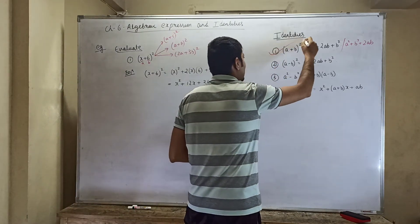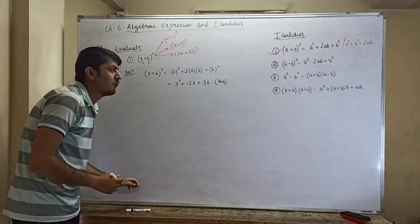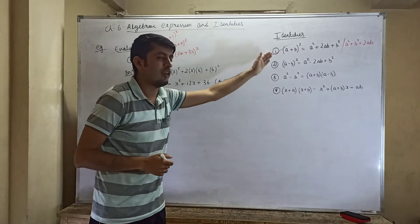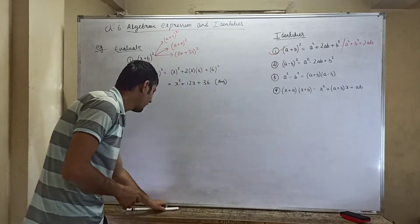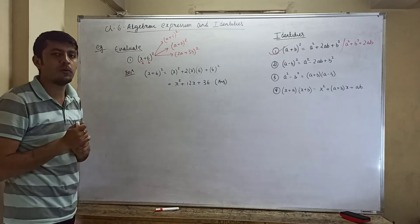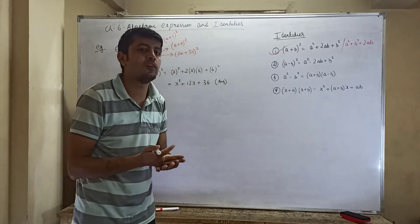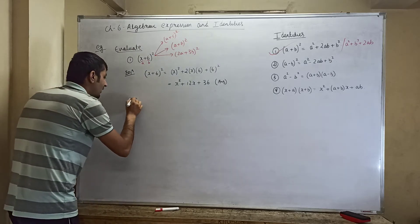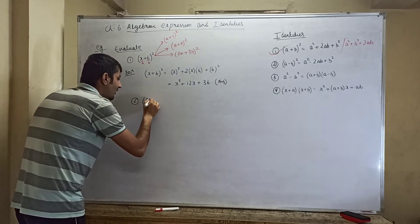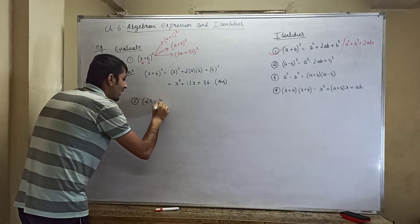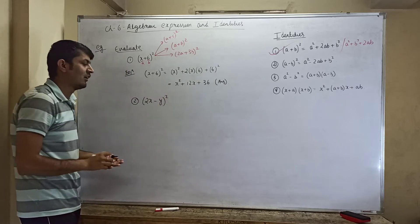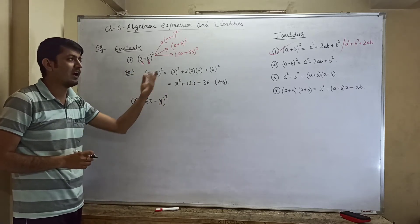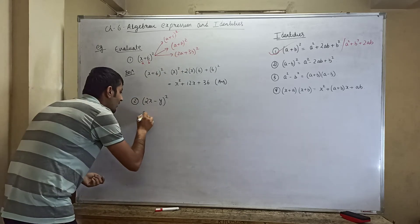Now let us move to the second type: (a − b) whole squared. Whenever you see a minus sign, you use the second identity. Suppose they give you (2x − y) whole squared. Here there is a minus sign, so this is of the form (a − b) whole squared, and we use the second identity.